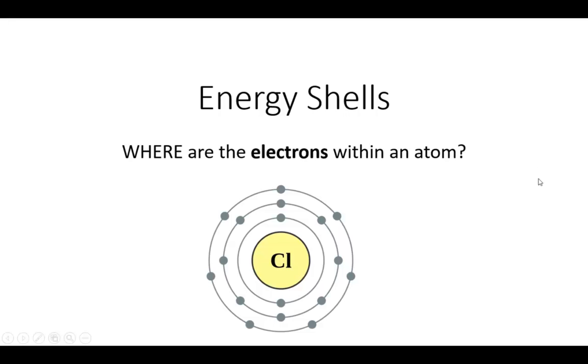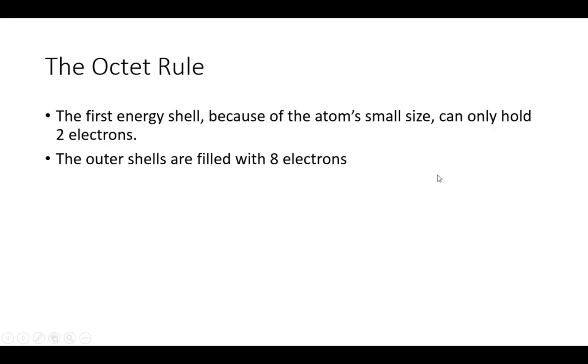Energy shells. Where are the electrons within an atom? The octet rule. The first energy shell, because of the atom's small size, can only hold two electrons. The outer shells are filled with eight electrons.